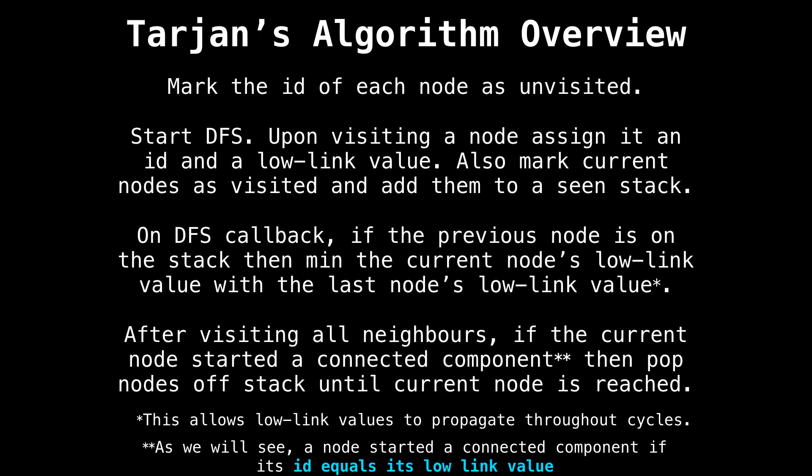We'll be doing an example in the following slides, but this is Tarjan's algorithm in a nutshell. Start out and mark each node as unvisited. Start the depth first search somewhere and don't stop until all the nodes are visited. Upon visiting a node, assign it an ID and a low link value. Additionally, mark the node as visited and add it to the stack. On the depth first search callback, after the recursion comes back, if the previous node is on the stack, then min the current node's low link value with the last node's low link value.